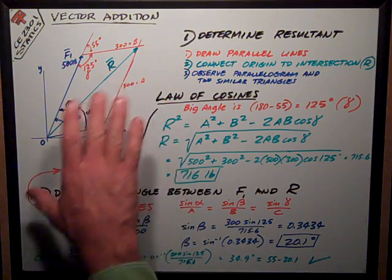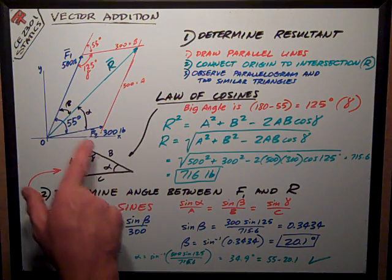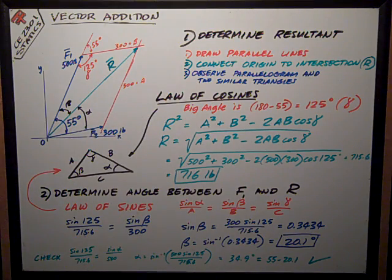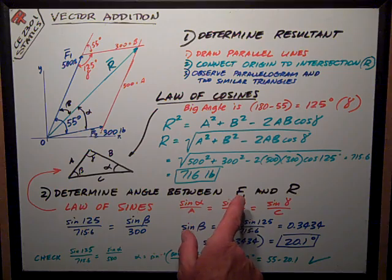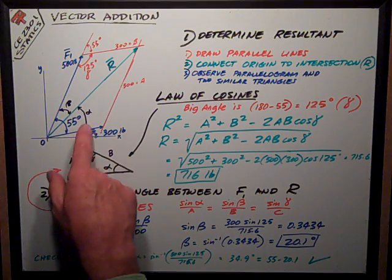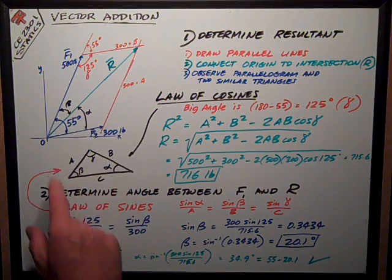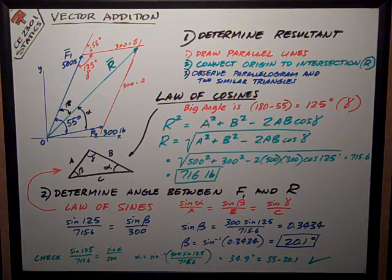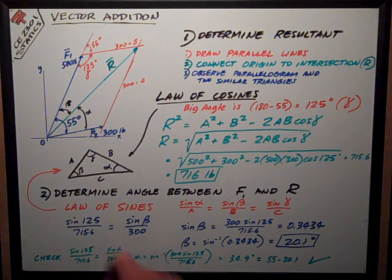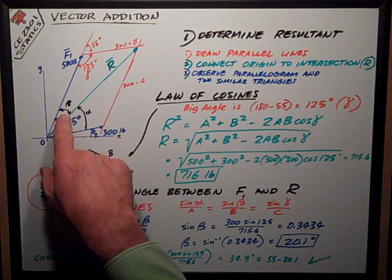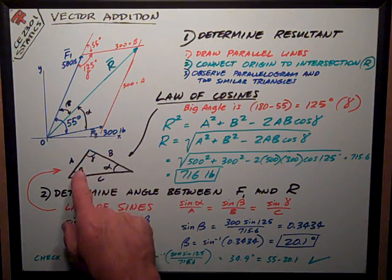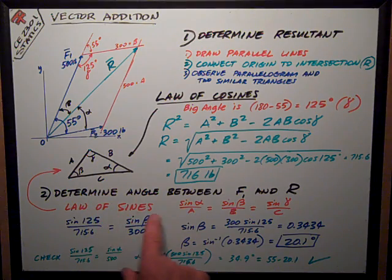I look at that graphically. I always want to say, does that make sense? If this is 500 and this is 300, yeah, that looks like 700 something. Part two is determine the angle between F1 and the resultant. That means this angle here that I've called beta, drawn in black. To figure out this kind of angle, we use the law of sines.